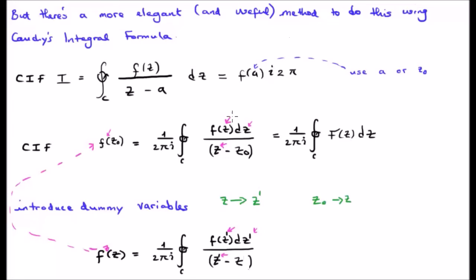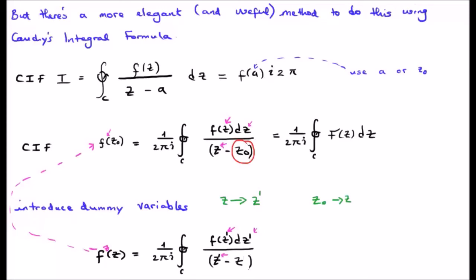I have placed small pink arrows just to make clear where the primes are and where they aren't. The new variable of integration is dz prime. We're going to integrate using z prime and that gives us f(z). We want f(z), not f(z prime), but we're using this dummy variable z prime in order to get at f(z) and later to get at the pole z_0.